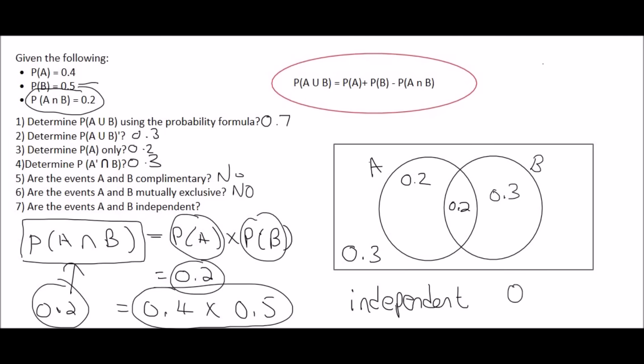But if we ended up with 0.2 on the left and 0.15 on the right, then we would say that they are not independent, and you would call it dependent. So whenever you do an independent question, just use this formula. If the left side is the same as the right, then we can say independent. So these are going to be independent.